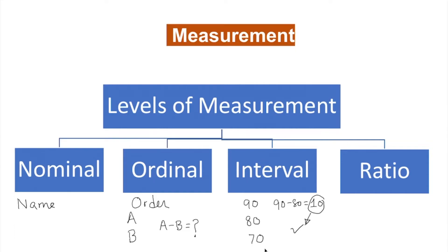Someone can also get zero — for example, 90 minus 0 is 90 — so that is still interval. Now let's move into ratio. Ratio has both ordinal and interval properties, plus one extra: a natural zero starting point. In ratio, you're comparing two quantities — A over B — and in this case zero actually means something, like taxable income. Zero means there is no quantity.